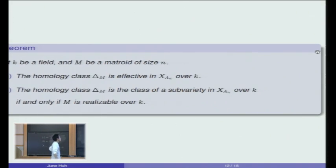The main property is that for any field K and any matroid, this homology class Δ_M, defined over the integers, is effective in that toric variety, meaning that you can always write it as a non-negative linear combination of subvarieties over whatever field K. But this homology class Δ_M is the class of a subvariety of the permutahedral variety over K, exactly when your matroid is realizable over K. That's an if and only if condition.